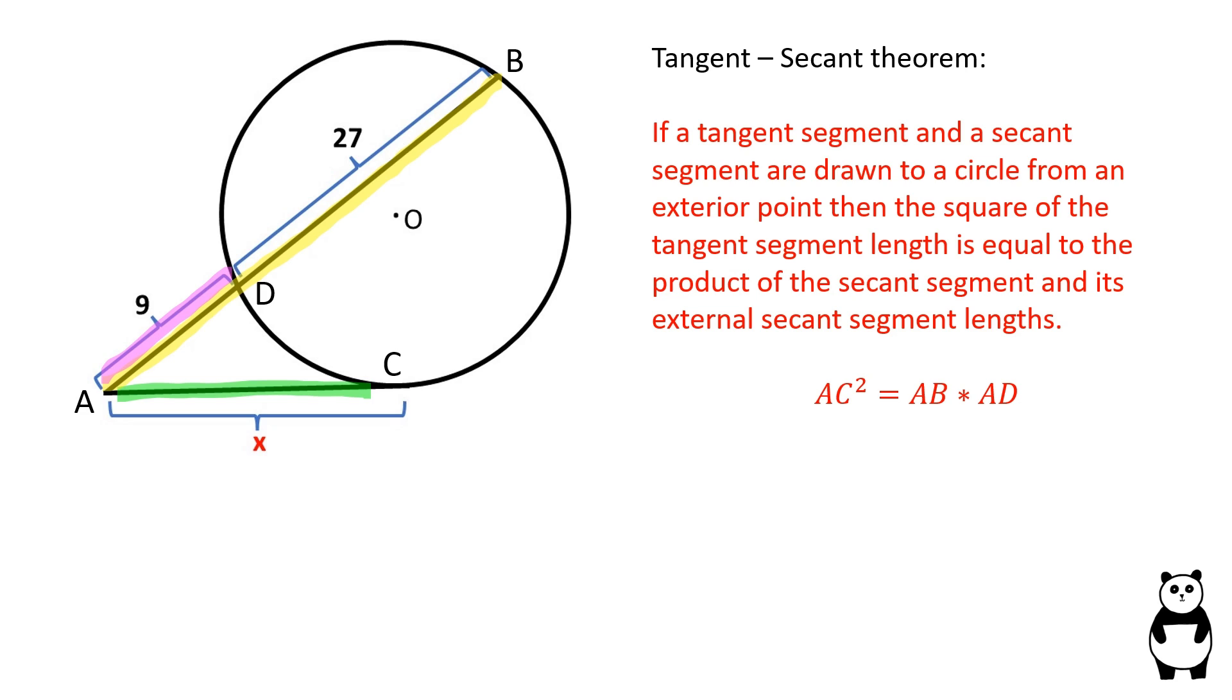AC² equals AB times AD. Since AB equals 36, AC equals 18.